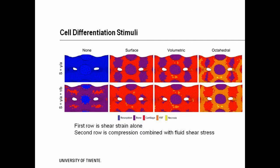For illustrative purposes, the theory of Prendergast was used to show the effect of strain calculation on cell differentiation in the initial states of tissue formation. The top row shows cell differentiation based on mechanical strain only. The bottom row is mechanical strain and fluid shear stress. Each column depicts the influence of the strain calculation.